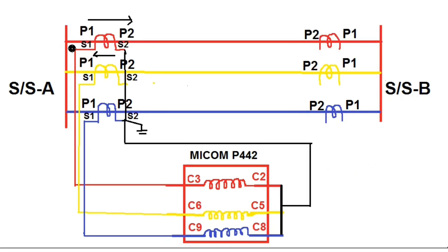In the normal case, if current flows in the primary side from P1 to P2, the CT secondary current flows from S2 to S1. In the Micom P442 relay coil, current will flow in the direction C3 to C2. Since current flows from C3 to C2, the relay will see this current as a forward direction.